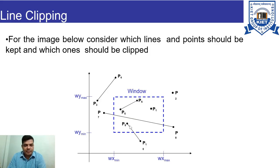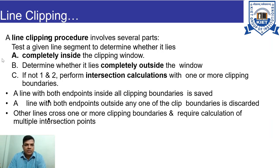For line p1–p9, half the line is inside the window and half is outside; the portion inside is kept for display and the portion outside is ignored. Similarly for line p7–p8. A line clipping procedure involves testing a given line segment to determine whether it lies completely inside the clipping window, completely outside the clipping window, or intersects with the clipping window — meaning it is partially inside and partially outside.